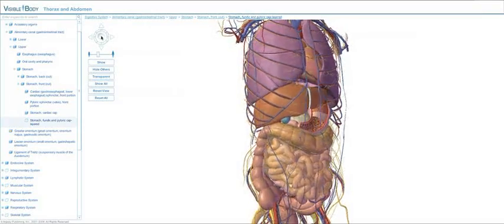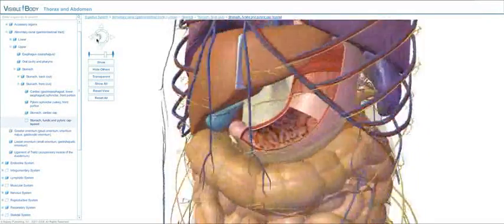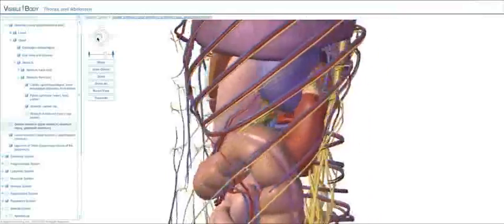Use Visible Body to look inside major organs. Use the mouse to select the stomach. Click the Hide button and see the muscle layers that make up the stomach.